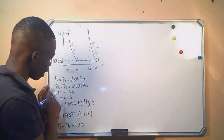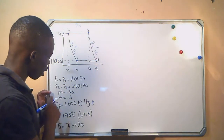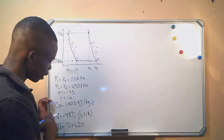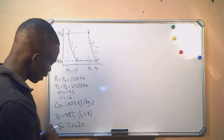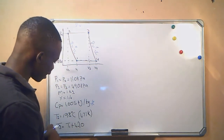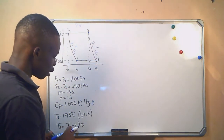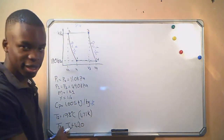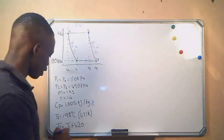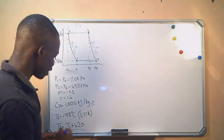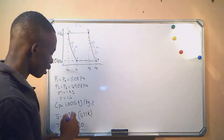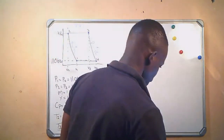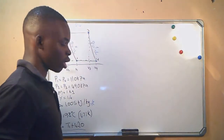We are given the mass of the air, gamma, and the specific heat capacity at constant pressure. We are also given T2 and told that T3 is 420 degrees higher than the initial temperature T1. That is why T3 equals T1 plus 420. With that relationship established, we proceed to the questions.